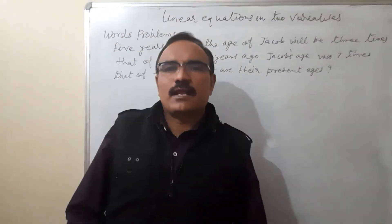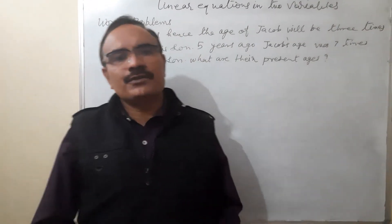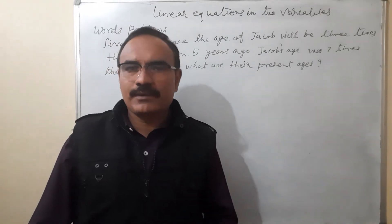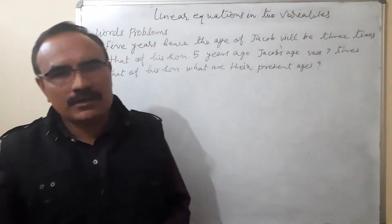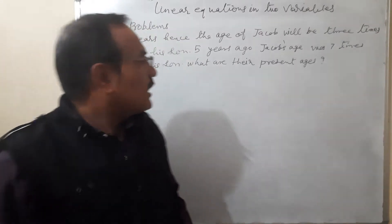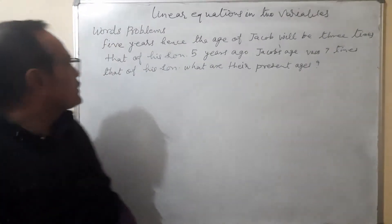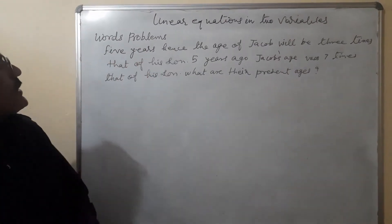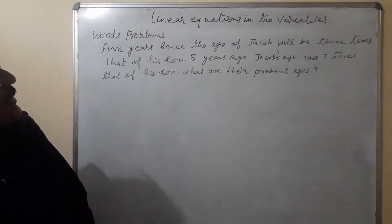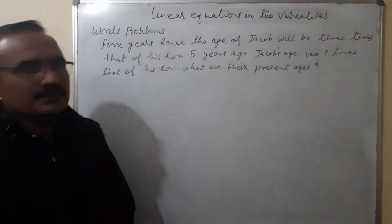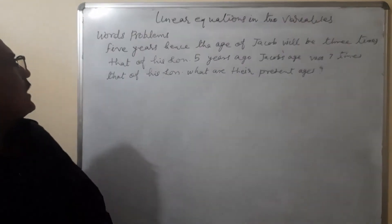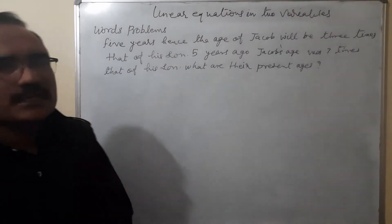Hello friends, in my last video I told you that next time we will discuss word problems of linear equations in two variables. I have selected some word problems and I am discussing them one by one. The first question is: 5 years hence the age of Jacob will be 3 times that of his son. 5 years ago Jacob's age was 7 times that of his son. What are their present ages?